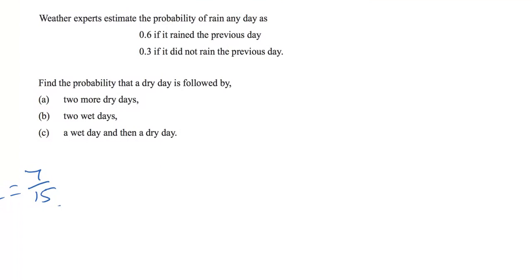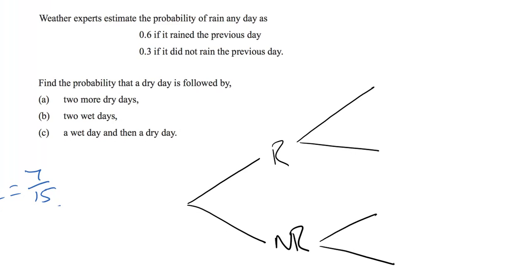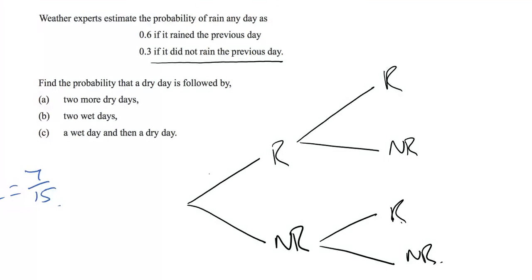Let's look at another example with decimals. Weather experts estimate the probability of rain on any day as 0.6 if it rained the previous day, and 0.3 if it did not rain the previous day. Find the probability that a dry day is followed by two more dry days, two wet days, and a wet day then a dry day. We start with a dry day, so it did not rain the previous day. Our chance of it raining is 0.3 and not raining is 0.7.